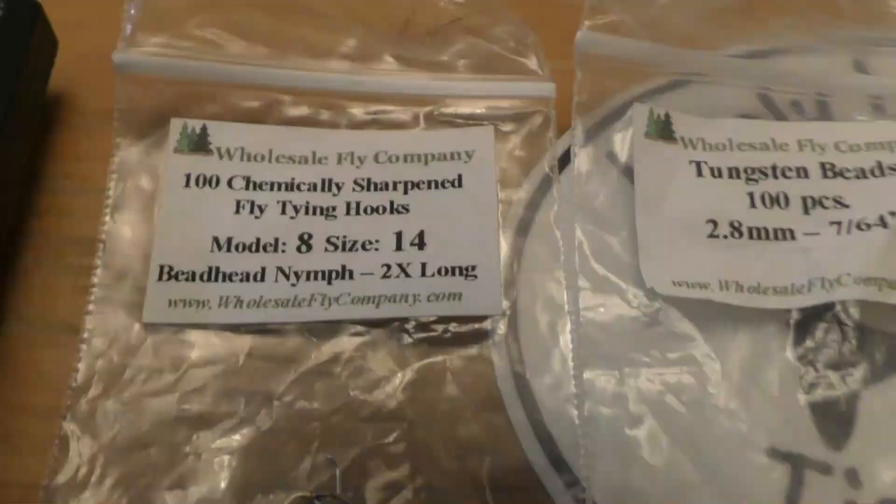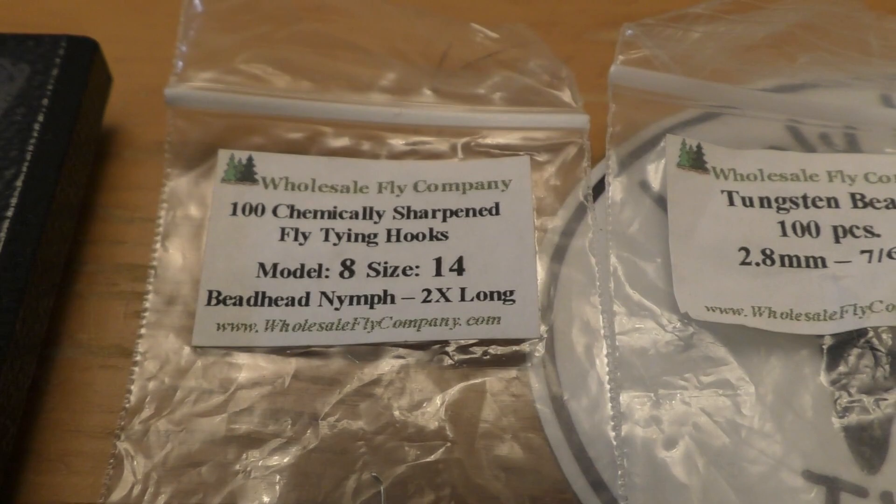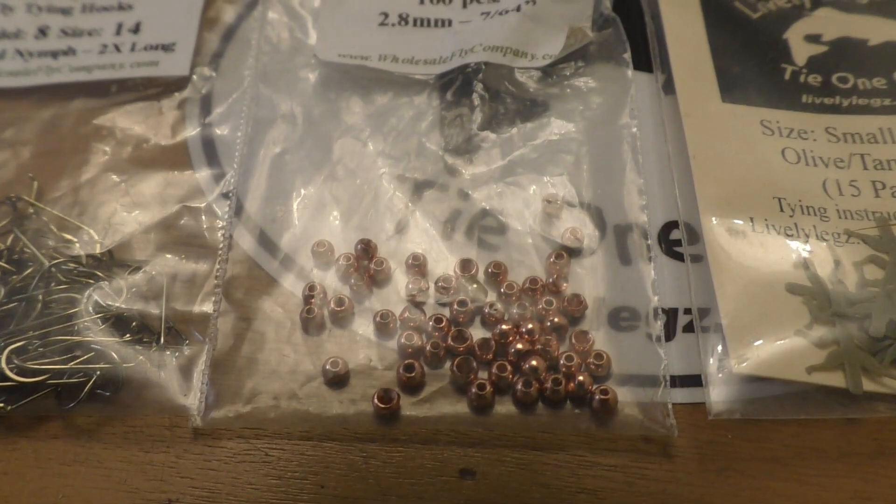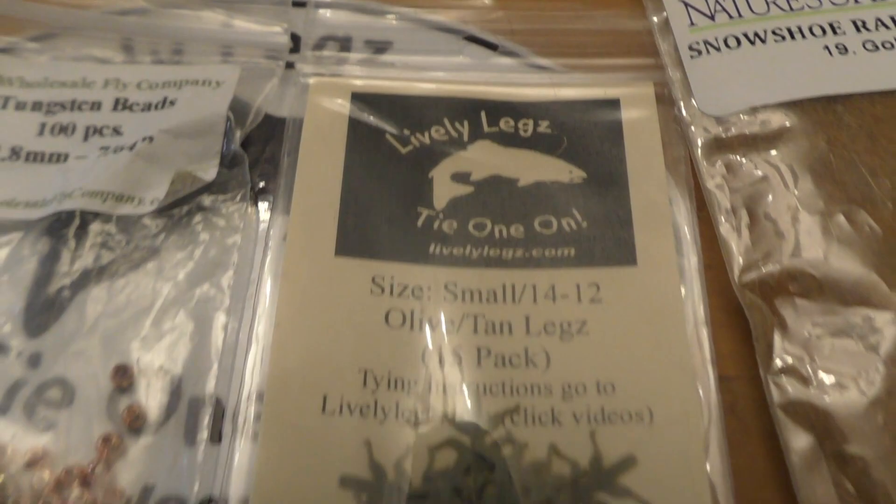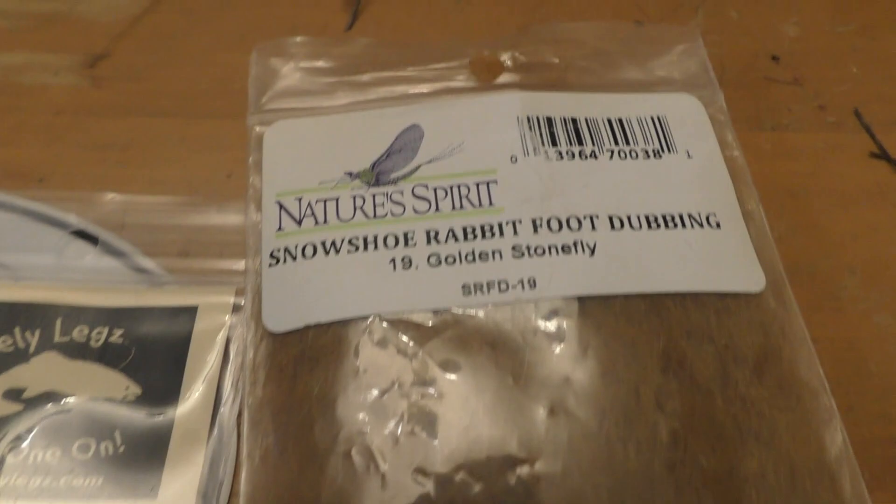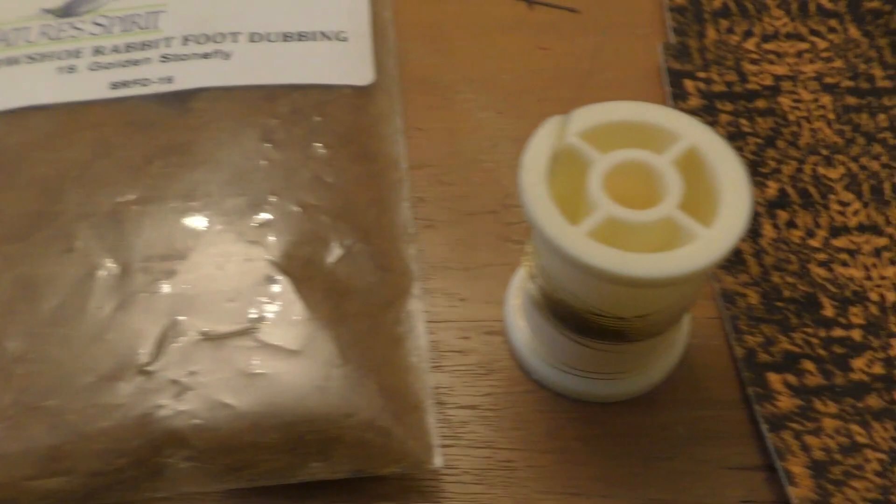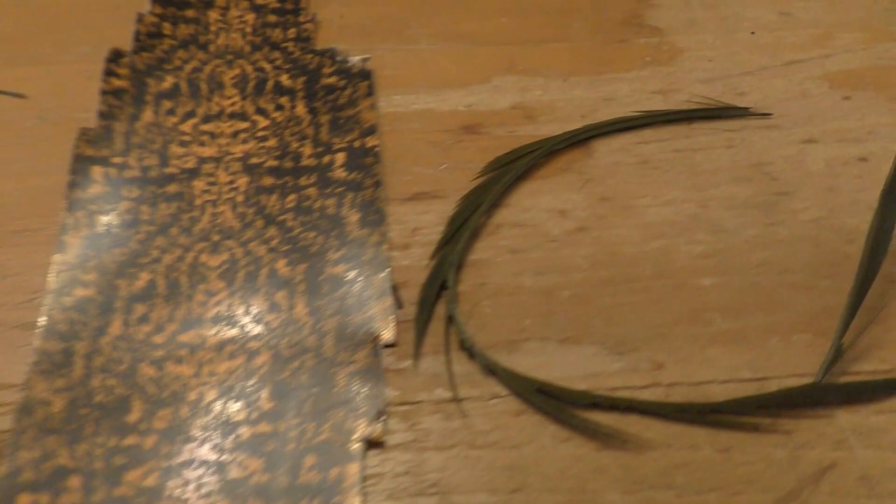Today we're tying on a size 14 2x long nymph hook. We have a 2.8 millimeter copper tungsten bead, lively legs in the right sizing—you can use any color you want—golden stonefly dubbing for the body and wing case, fine gold wire for a rib, thin skin for the wing case, and olive biots for the tail of the fly.